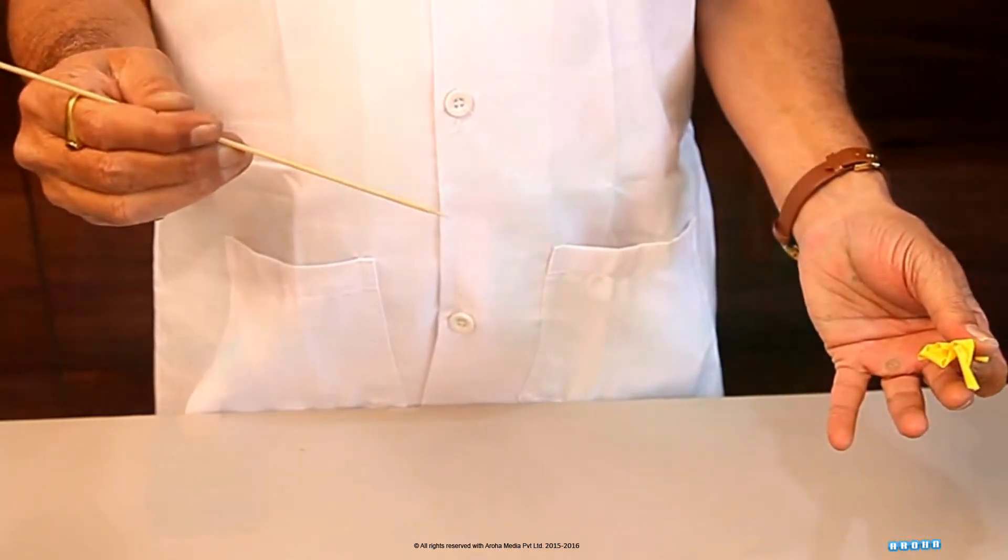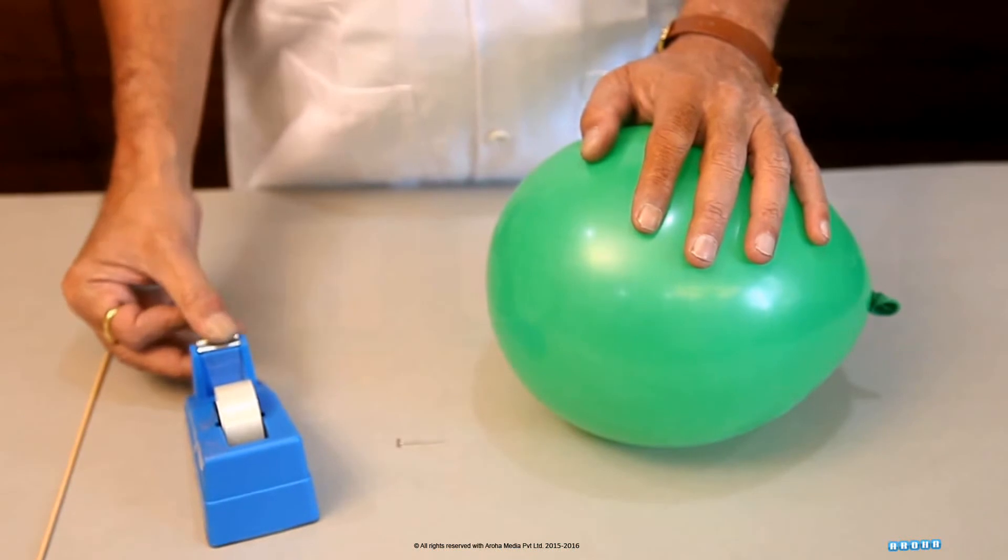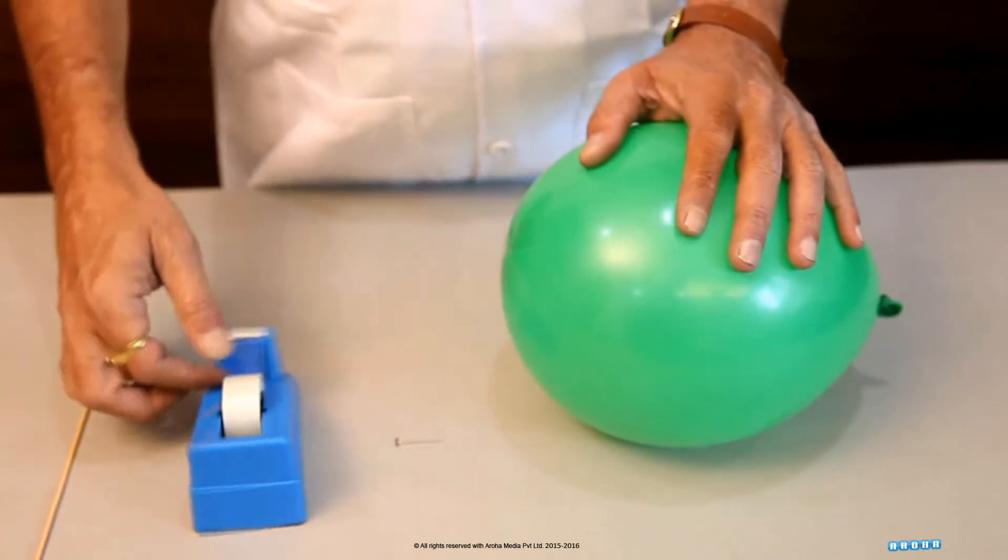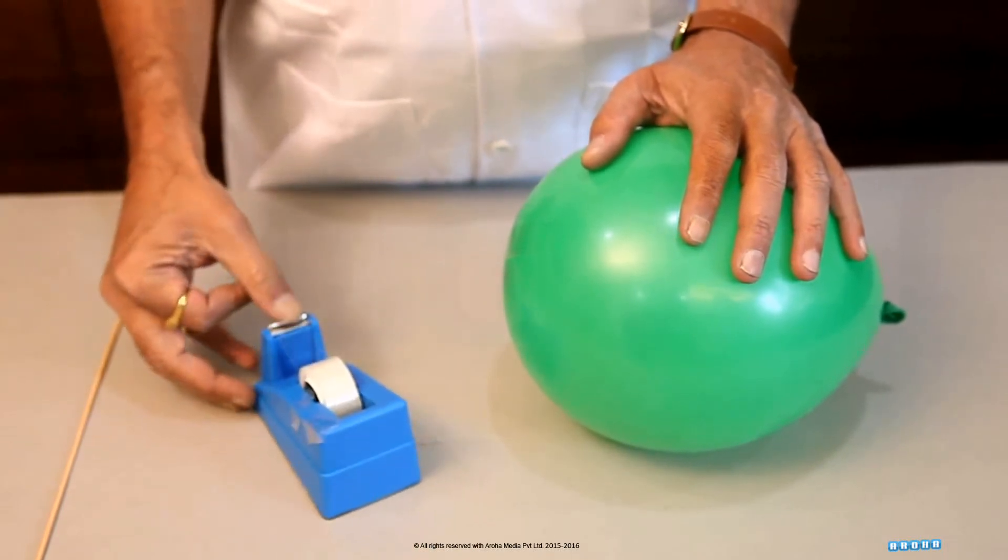Now, take another balloon and two pieces of sticky tape and stick them onto the balloon in a way that they overlap and make a cross shape.